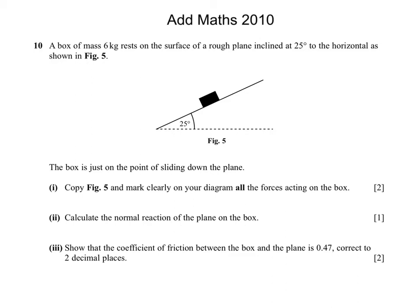2010 paper 2 question 10. Let's start by drawing a force diagram. We have the weight of the block, 6g, so that's 60 newtons acting down, and the reaction. The block is on the point of sliding down the slope.